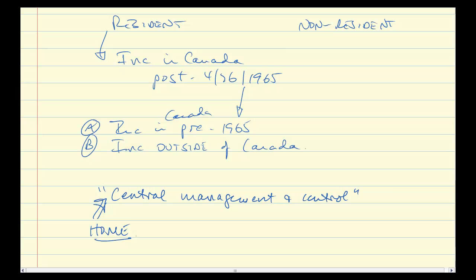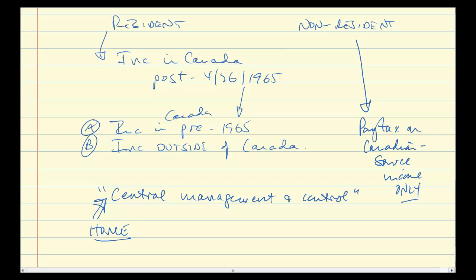Why does it matter for corporations? It's exactly the same as for individuals. If you're considered a resident in Canada, then you are liable for Canadian tax on your income. If you're not, you pay tax on Canadian source income only. Source is not a simple thing to figure out, but for now we'll assume that it is, and we'll leave it at that.